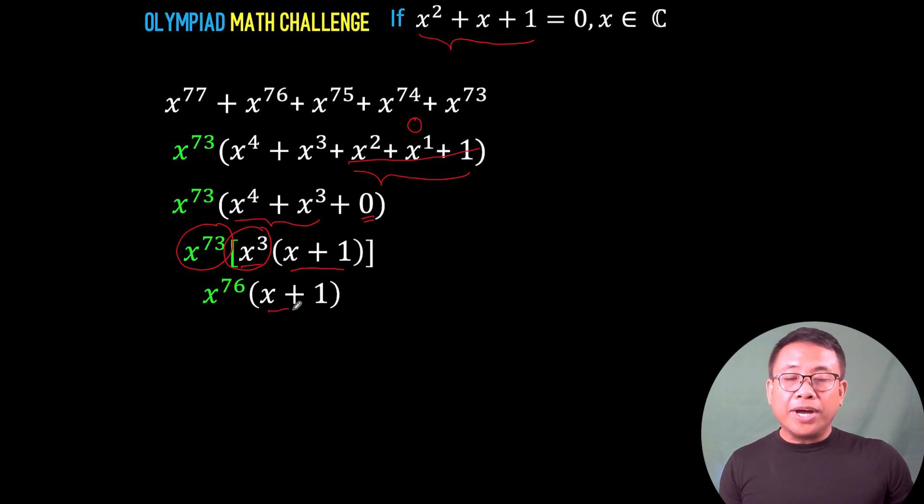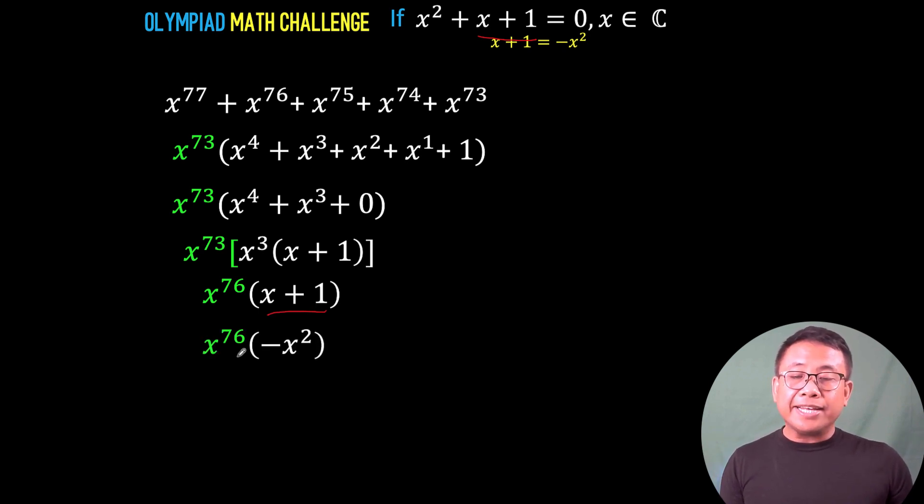Now, we would like to know what expression we can substitute for x + 1 from the given equation. Notice that x² + x + 1 = 0. All we have to do is subtract x² from both sides of the equation. And so, we have x + 1 = -x². We can now replace this part by -x² to have x^76 times -x².